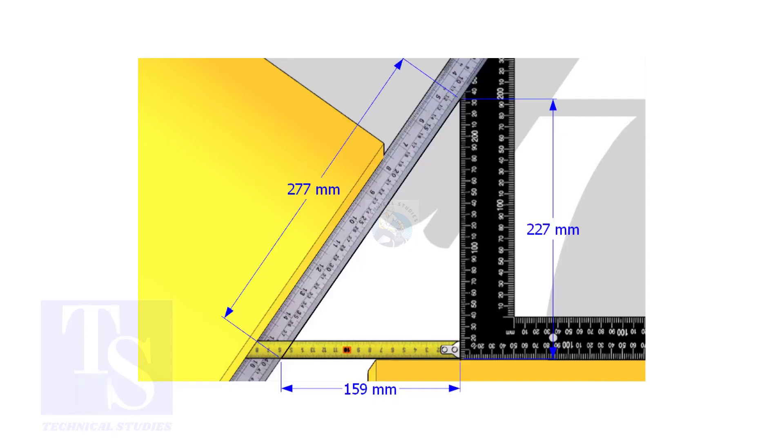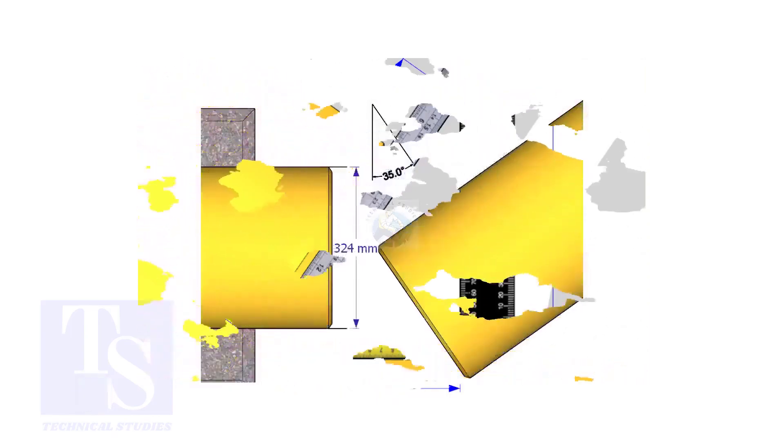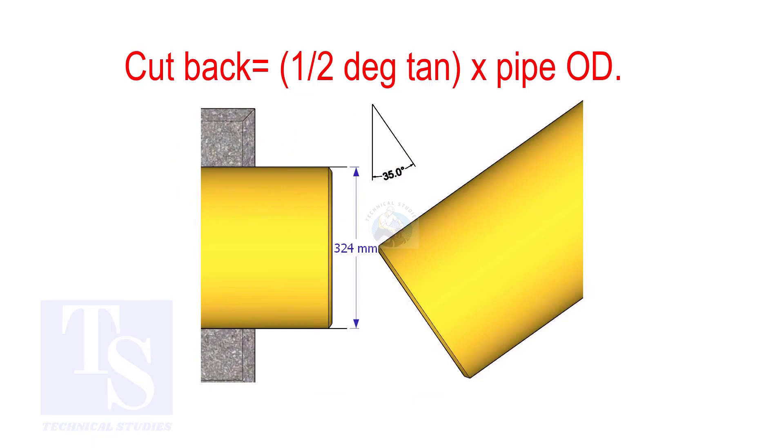How to calculate the cutback of a single cut miter. When it is a single cut, the cutback is half degree tan multiplied by the OD of the pipe.